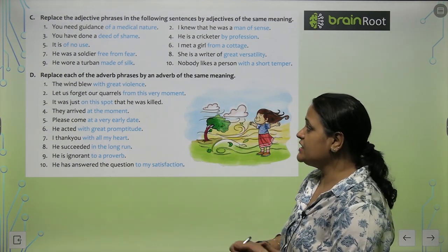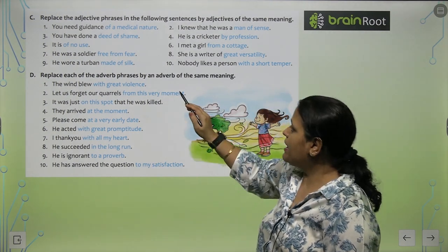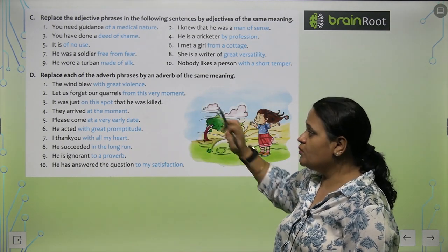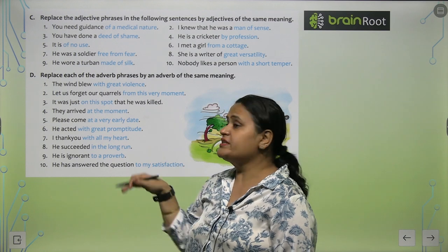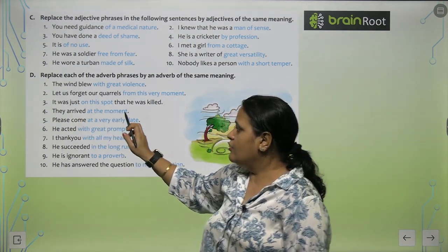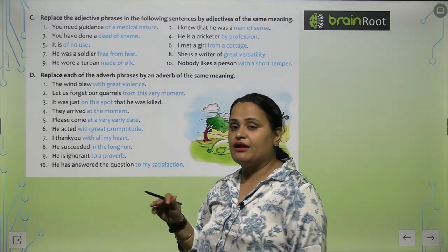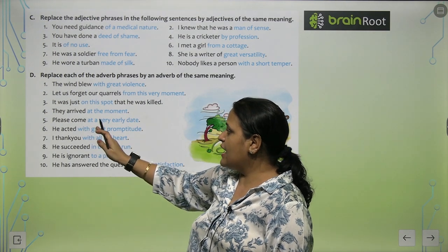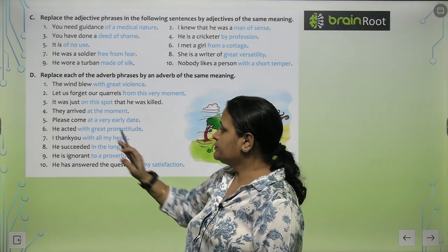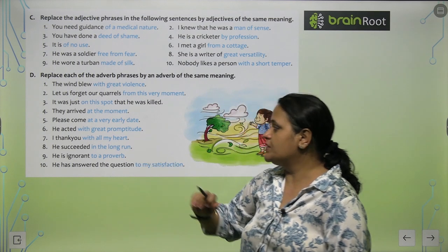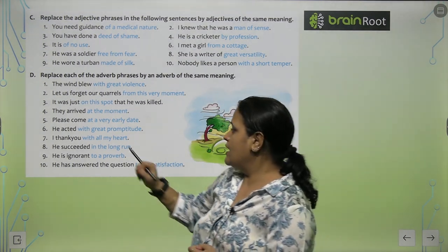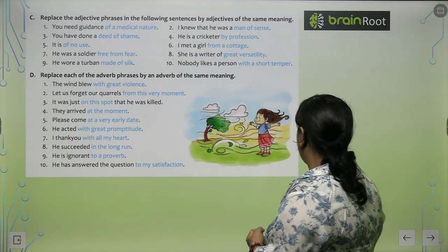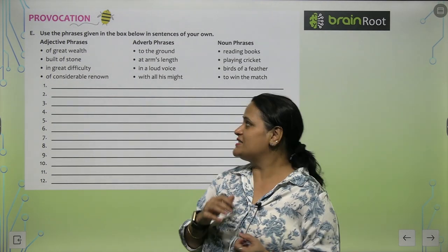Exercise D: Replace each adverb phrase with an adverb of the same meaning. 'Let us forget our quarrels from this very moment' becomes 'Let us forget our quarrels just now.' 'They arrived at the moment' — it remains the same. 'Please come at a very early date' becomes 'Please come soon.' 'He acted with great promptitude' becomes 'He acted promptly.' 'I thank you with all my heart' becomes 'I thank you wholeheartedly.' The remaining examples are for you to complete.